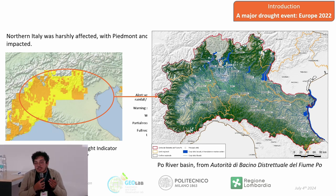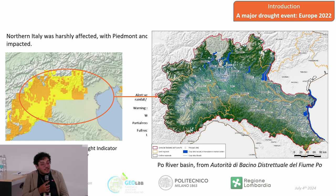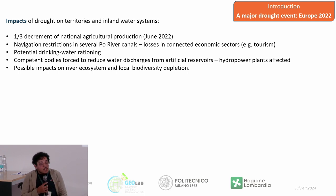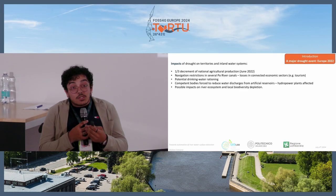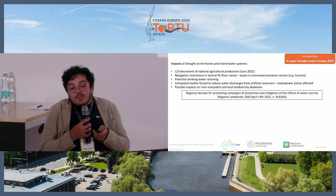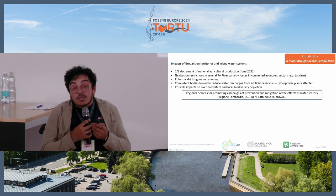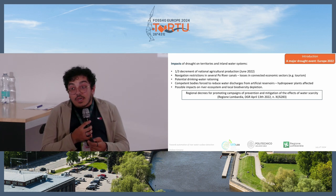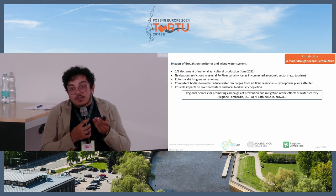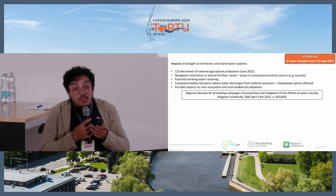The Po River is the largest river in Italy and is very important for different ecosystems. During the 2022 drought period, many impacts were found: decrement in agricultural production, navigation restrictions, and even potential risk of rationing drinking water. This led public authorities to request innovative tools for monitoring and understanding conditions on the territory regarding rivers, both during droughts and in normal times.